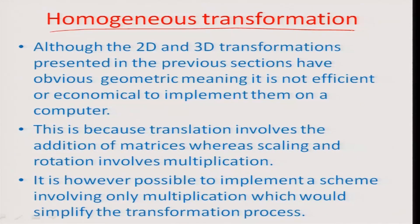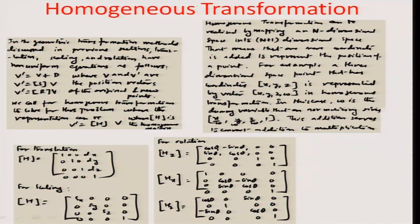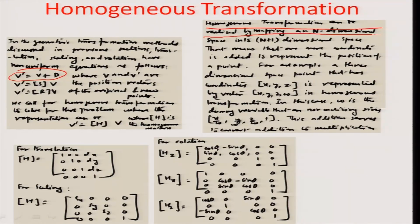The homogeneous transformation is important because it is economical to implement this kind of transformation in the computer. Everything would be in terms of matrix multiplication rather than matrix additions. We can do this homogeneous transformation by mapping n dimensional space into n plus 1 dimensional space, which means that you add one more coordinate basically. I am going to take this homogeneous transformation in the next lecture in the interest of time and I close on this module here. Thank you.